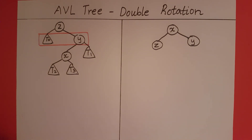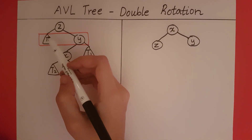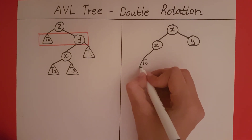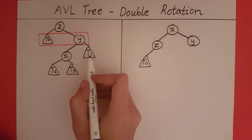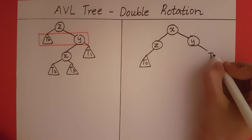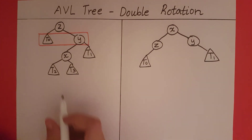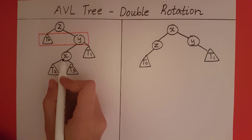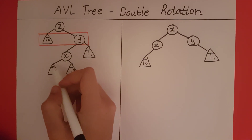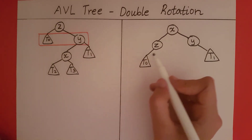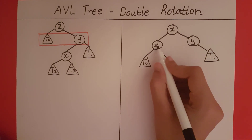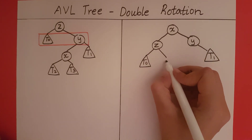Now we need to know where the subtrees go. T0 was to the left of Z — that space is still empty, so we can keep that. T1 was to the right of Y — that space is still empty, so we can keep that. T2 comes to the left of X, but that space is not empty. T2 is coming between X and Z, so we place it there — the right child of Z is going to have T2.